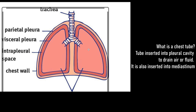What is a chest tube? It is a tube that is inserted into the pleural space or cavity to drain air or fluid, and it helps the lung to re-expand. It is also inserted into the mediastinum to drain fluid after cardiac surgery.